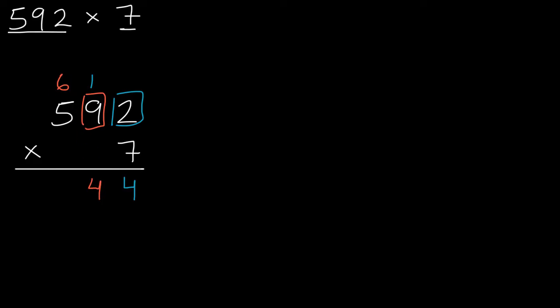And then last but not least, 5 hundreds times 7 is going to be 35 hundreds. And then you add 6 hundreds, you get 41 hundreds. So 41 hundreds, so it's 4,144.